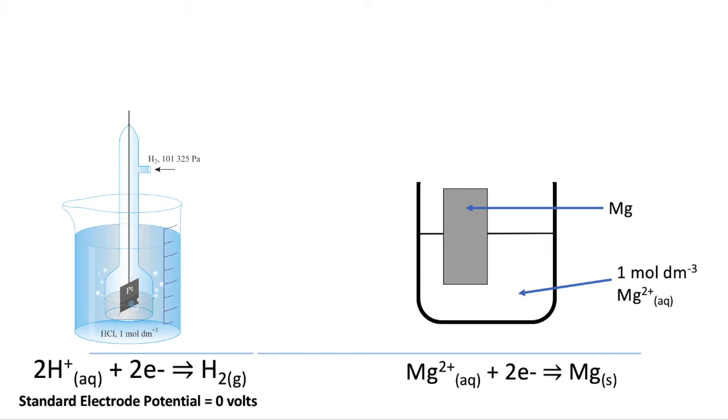And so we say the standard electric potential of the hydrogen is zero volts. And so anything else is due to the magnesium. So we need to connect these up. So we're going to put a volt meter across them because the volt meter is going to measure the potential. And we need to connect that volt meter to those two cells with a piece of wire.